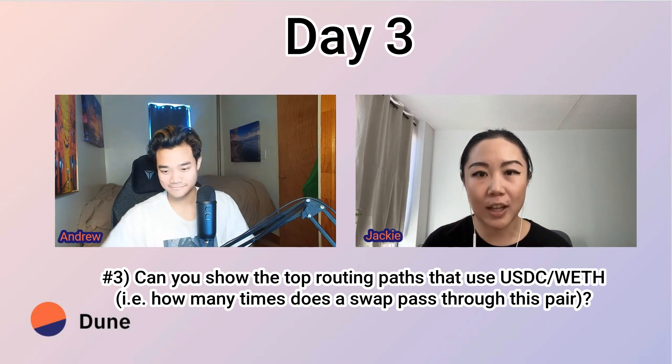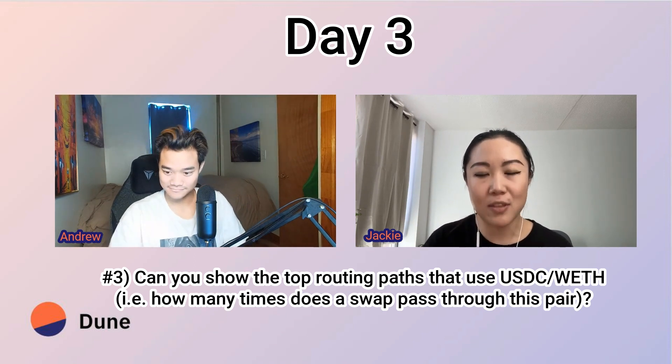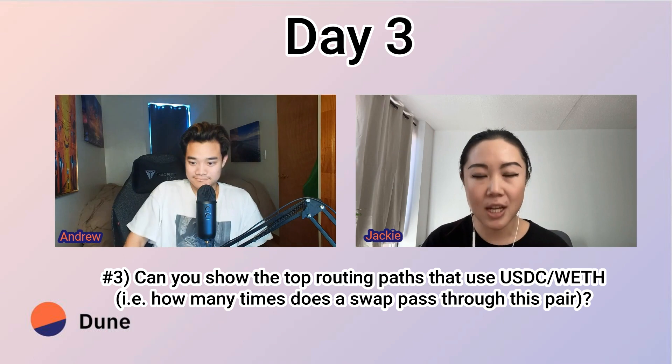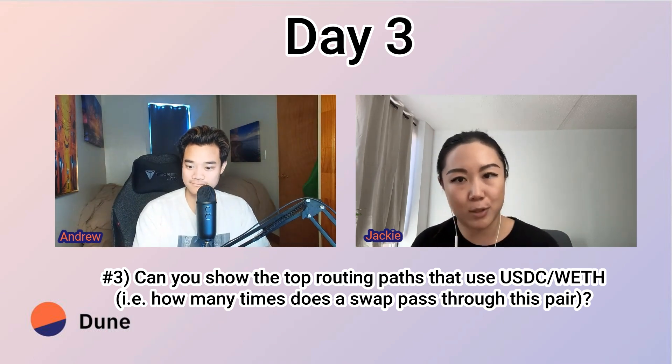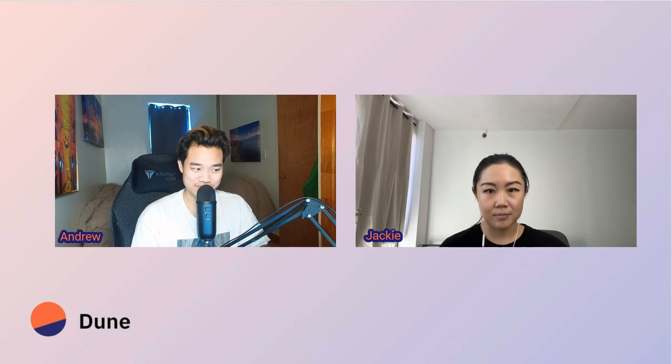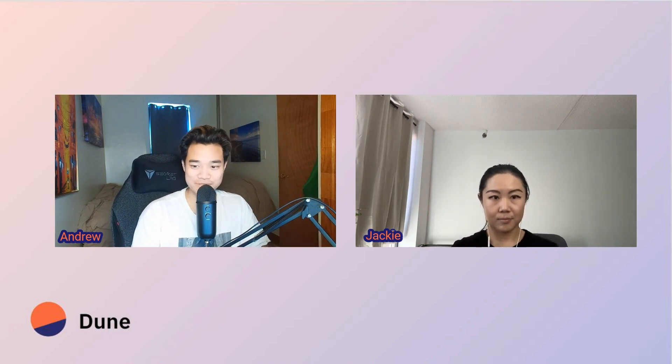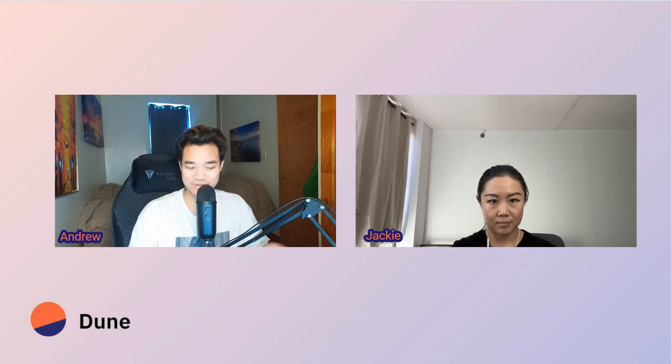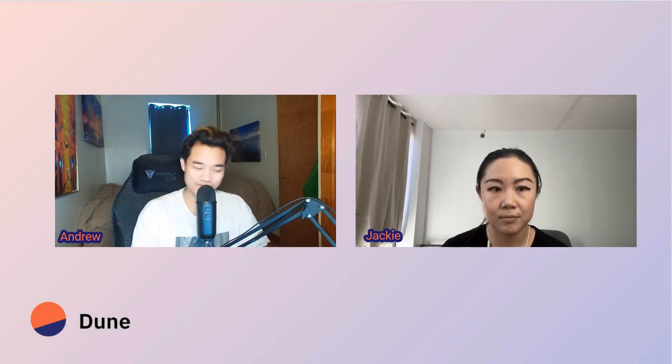We're going to look at the top routing paths that use USDC and wrapped ETH. In particular, we're only looking at Uniswap V2 Router 2. Router 2 is essentially a smart contract that says: if I want to swap between two currencies, what's the easiest way? You might have a USDC/ETH pair and a USDC/Bitcoin pair, and if you don't have a Bitcoin/ETH pair, you can't swap between them unless you have a router. So the router has a bunch of functions to do swaps.